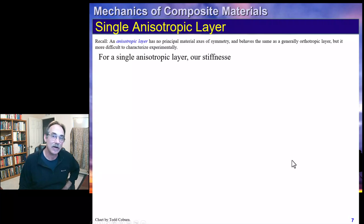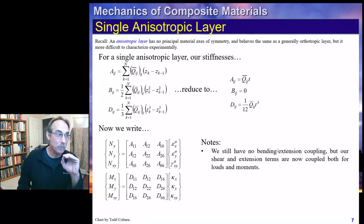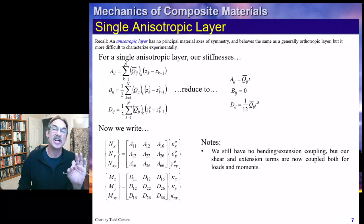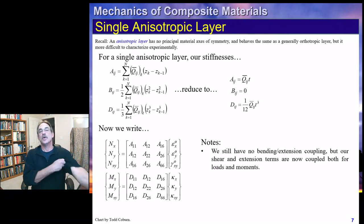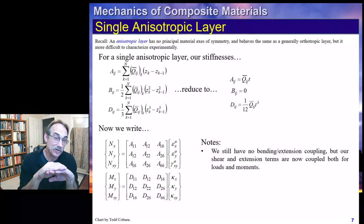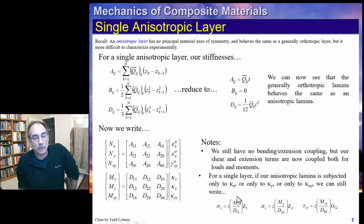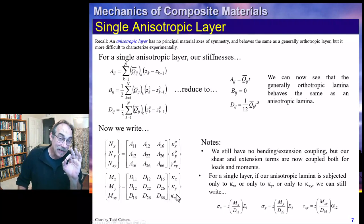For a single anisotropic layer, the B matrix is again zero since it's a single layer. However, there is coupling between extension and shear and between bending and twist — similar to a generally orthotropic lamina. Importantly, an orthotropic lamina loses its benefit if used in a non-aligned direction because it acts just like an isotropic layer in that case. But since the B matrix is zero, extension and bending behavior remains uncoupled, and we can still write stresses in the simple form.